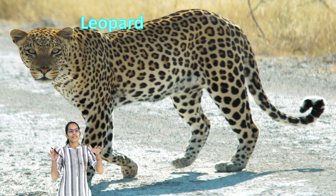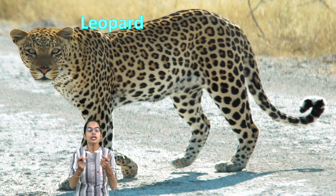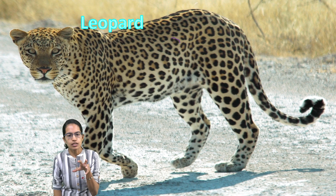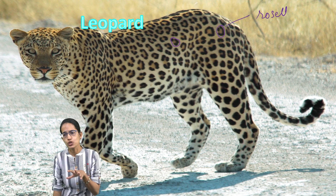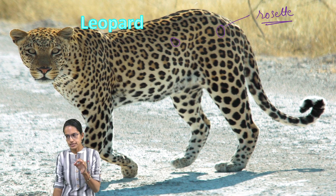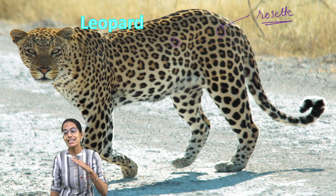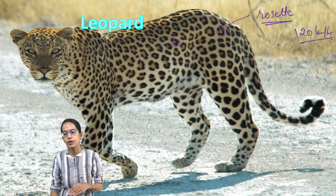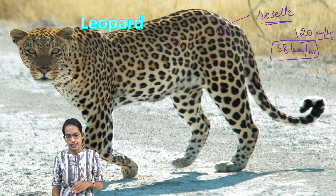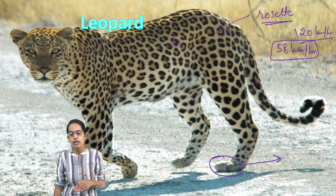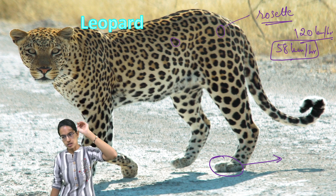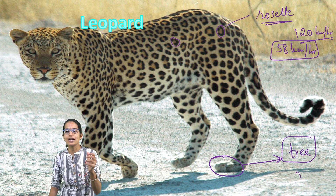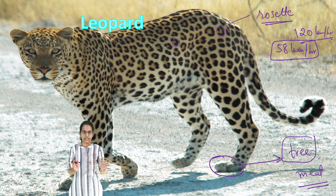The next is leopard. Leopard is relatively shorter in height and stout. It does not have the tear line. The spots are unique — rose-shaped, also known as rosettes. The speed of the leopard is relatively less than cheetah; cheetah can go up to 120 kilometers per hour, whereas leopard can reach up to 58 kilometers per hour. Leopard's claws are unique — they can catch prey and climb to the top of a tree to protect their meal.